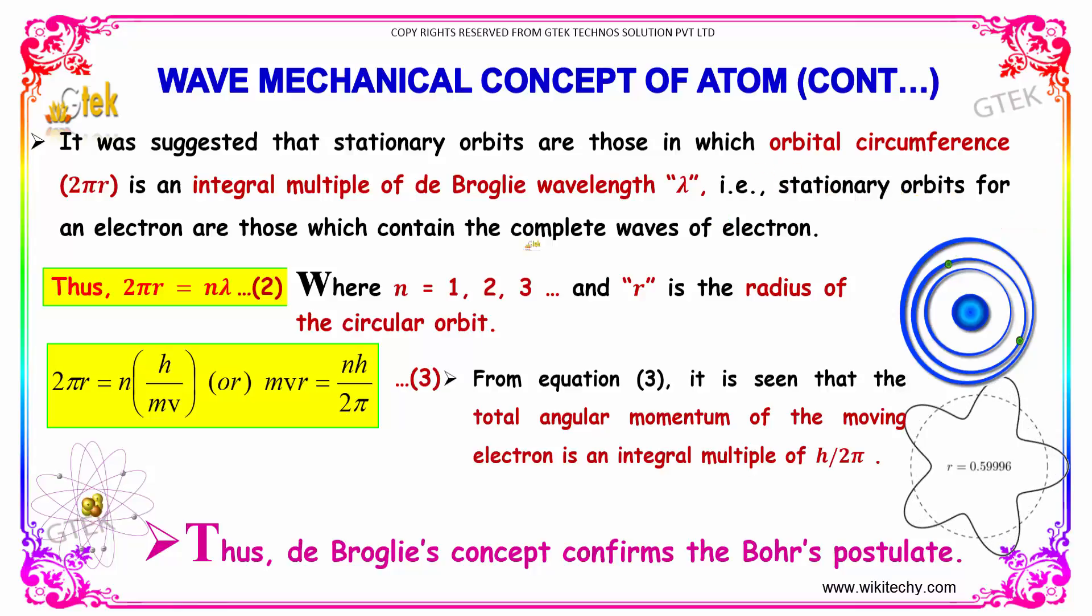Therefore, the stationary orbits for an electron are those which contain the complete wave of electron, and we get the equation 2πr = nλ.